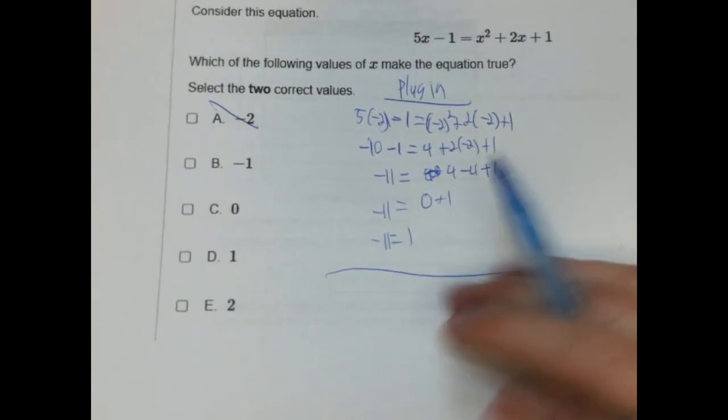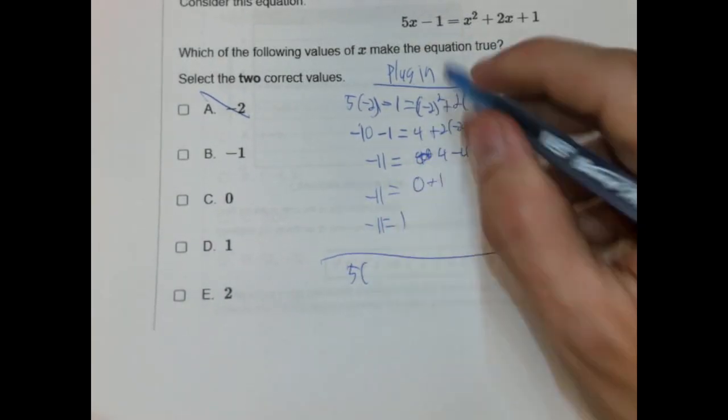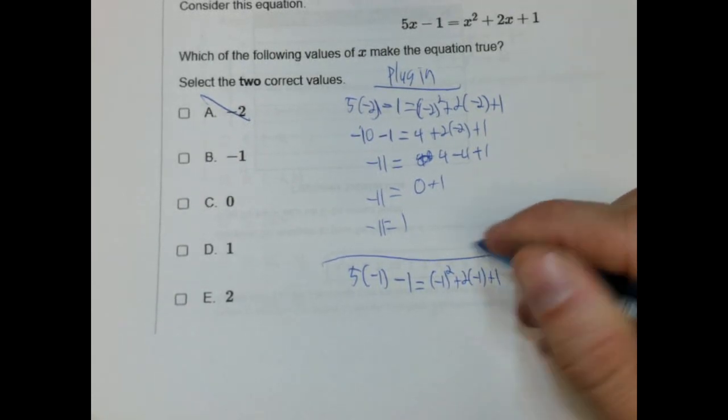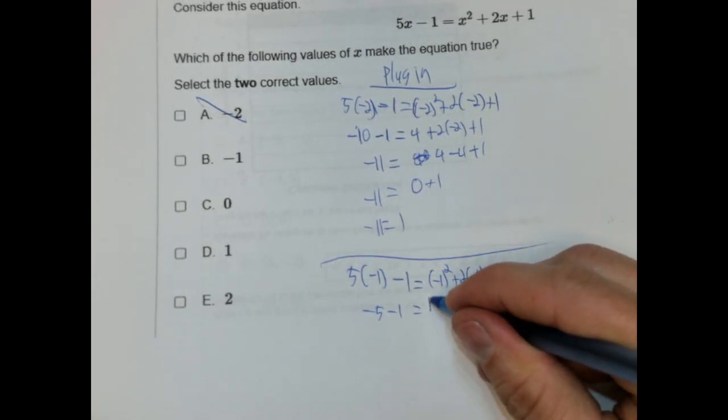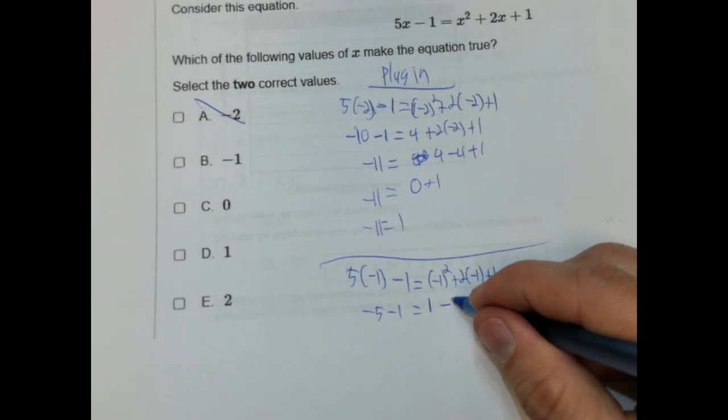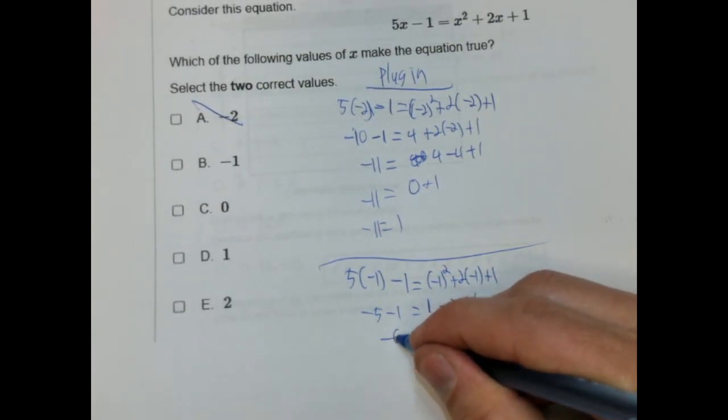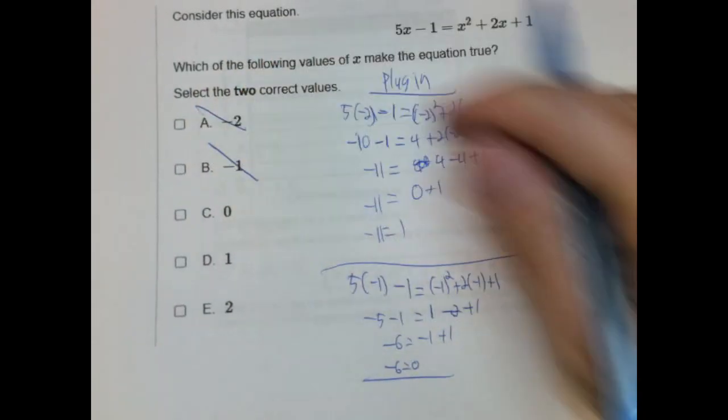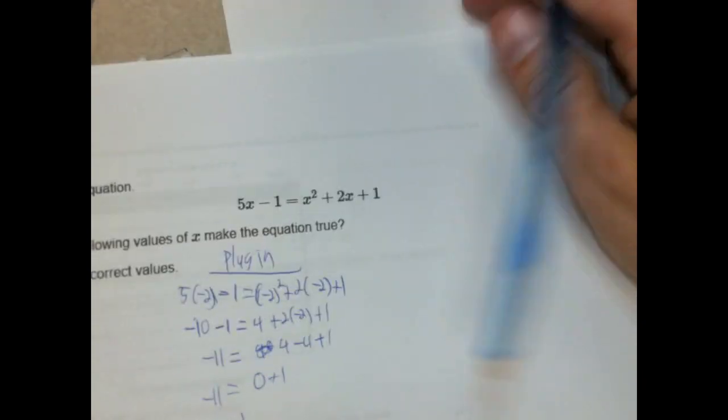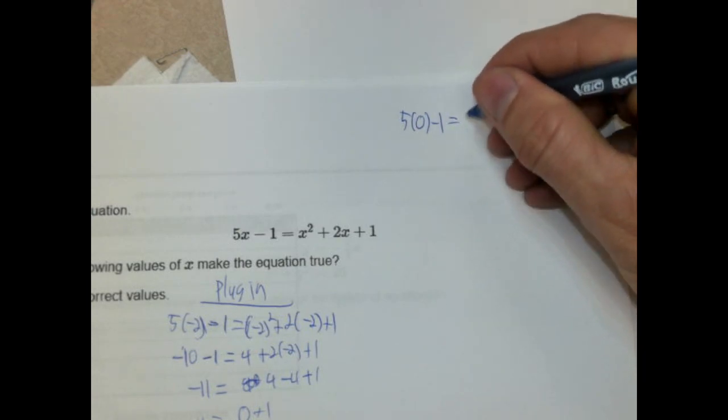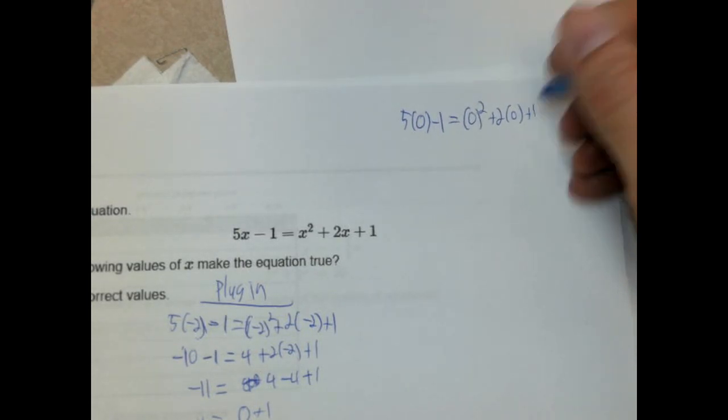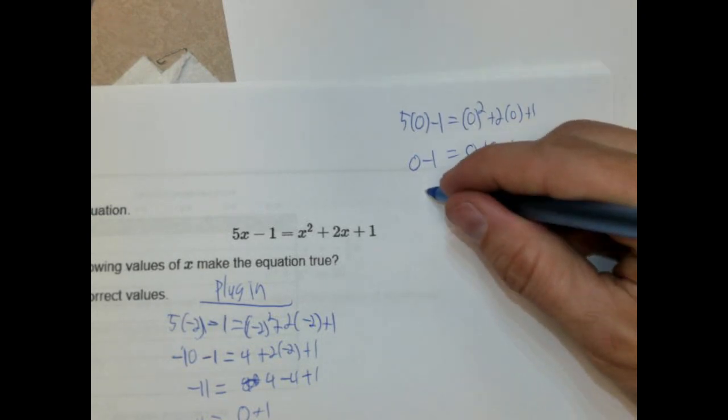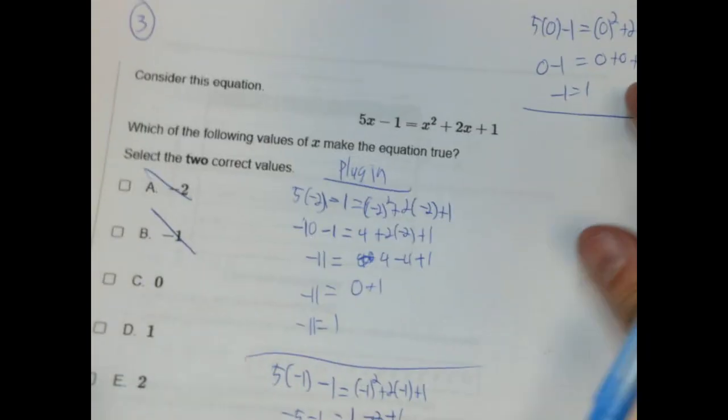We're going to do this for all of them. So let's go ahead and do it. So we're going to plug in negative 1. So we have 5 times negative 1 minus 1 equals negative 1 squared plus 2 times negative 1 plus 1. 5 times negative 1 is negative 5 minus 1. Negative 1 squared is positive 1. 2 times negative 1 is negative 2 plus 1. Negative 5 minus 1 is negative 6. 1 minus 2 is negative 1. And then negative 1 plus 1 is 0. So negative 6 equals 0. That's obviously not true. This is out. Let's go over here. We're going to plug in 0. So 5 times 0 minus 1 equals 0 squared plus 2 times 0 plus 1. So 5 times 0 is 0. 0 squared is 0. 2 times 0 is 0. So we have negative 1 equals positive 1. That's out.